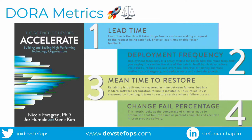Someone fairly senior in a bank told me: it takes us about 50 days to do two days' work. And developers get frustrated and leave. So when we look at this, the top two metrics are all about throughput, and the bottom ones are about stability.